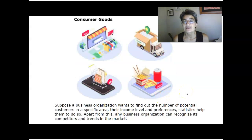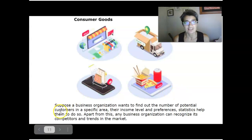Consumer goods. A business organization wants to find out the number of potential customers in a specific area, their income level, preferences. Statistics helps them do that. Any business organization can look at their competitors and trends in the market to see whether their product has any hope of selling in a particular area and what sort of marketing strategies they can use.